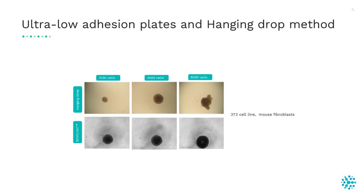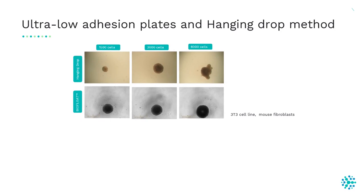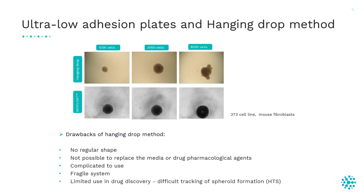Comparing spheroids from different methods using a mouse fibroblast cell line: in a low-adhesion plate, spheroids form with a round and regular morphology, whereas in the hanging drop system, spheroids show irregular shape and small cell satellites. A major disadvantage of the hanging drop method is that it is not possible to replace the media or drug during the experiment, which is important when monitoring drug response over several days. The hanging drop system is fragile, complicated to use, and not suitable for high-throughput screening, making it of limited use in drug discovery.